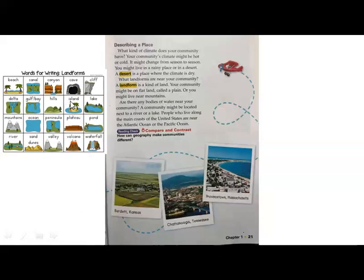More landform examples include: hills, island — Qatar has an island as well — lake, we have an artificial lake right next to our school, mountains, ocean, and peninsula. We know that Qatar is a peninsula: a piece of land covered with water on three sides. An island, in contrast, is covered with water on all four sides. Other landforms include: plateau — a raised surface, unlike a plain — pond, river, sand dunes, valley, volcano, and waterfall.